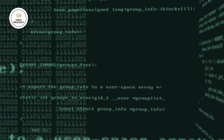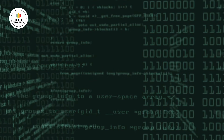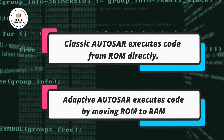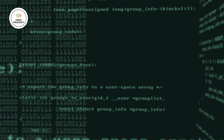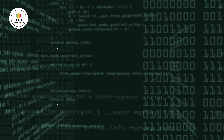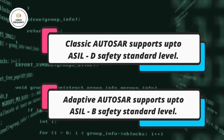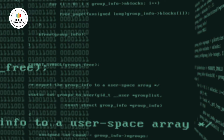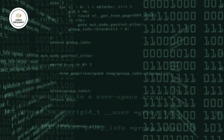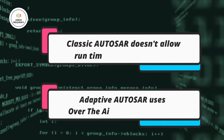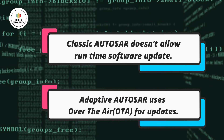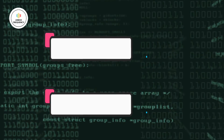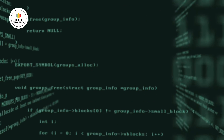The eighth difference is based on application execution: in classic AUTOSAR, the code is executed from ROM directly, whereas in adaptive AUTOSAR, the code is moved from ROM to RAM and then executed. The ninth difference is based on safety level: classic AUTOSAR supports up to ASIL D, whereas adaptive AUTOSAR supports up to ASIL B. The tenth difference is based on flexibility of software updates: software update at runtime is not possible in classic AUTOSAR and communication between software components is hardwired, whereas over-the-air update is possible in adaptive AUTOSAR, since the RTE is independent of the applications.